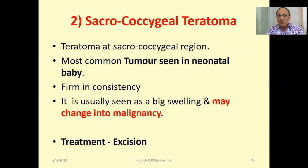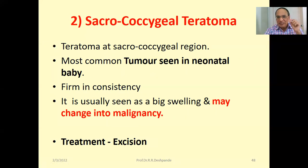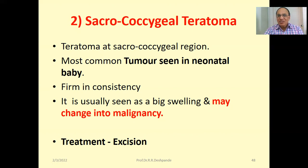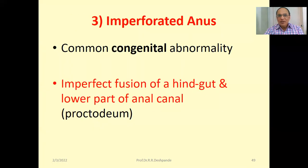Next, sacrococcygeal teratoma — a teratoma at the sacrococcygeal region, the low back. It is the most common tumor seen in neonatal babies, of hard consistency, usually seen as a big swelling. This teratoma may change into cancer or malignancy. The best treatment is to remove it — excision for the teratoma, just like the cyst.